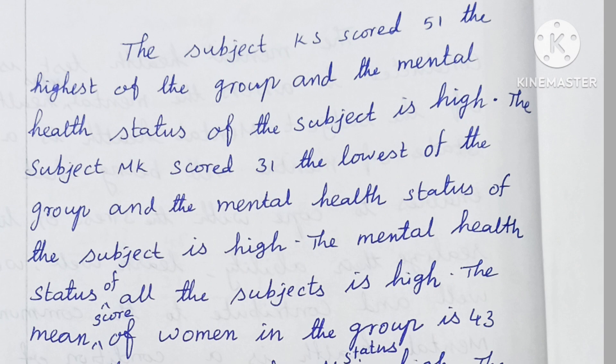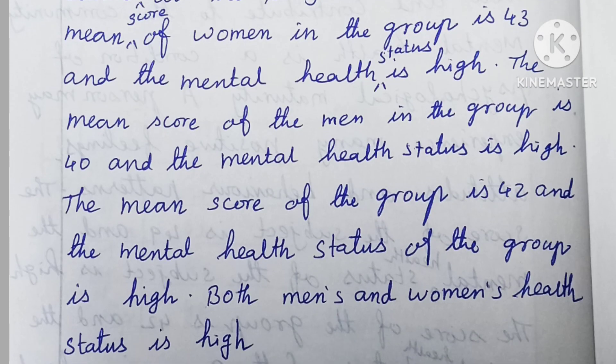In the second paragraph of the discussion, write the highest score and its mental health status, and the lowest score and its mental health status. Also mention how many persons got the highest mental score and how many got the lowest. Then compare the scores of women and men and explain, and mention the score and health status of the group.